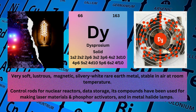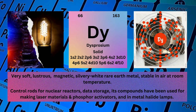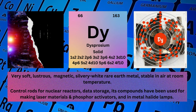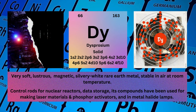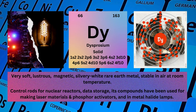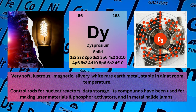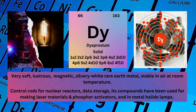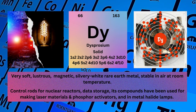Electronic configuration: 1s²2s²2p⁶3s²3p⁶4s²3d¹⁰4p⁶5s²4d¹⁰5p⁶6s²4f¹⁰. Physical properties: Very soft, lustrous, magnetic, silvery-white rare earth metal; stable in air at room temperature.